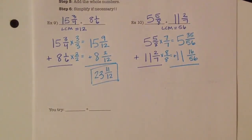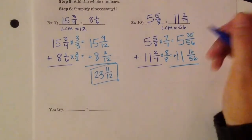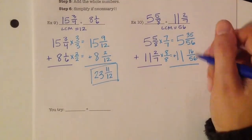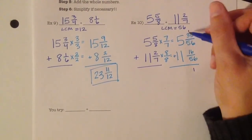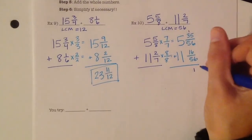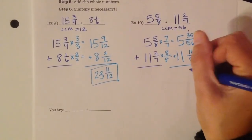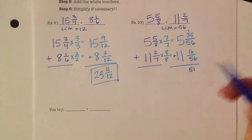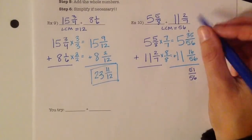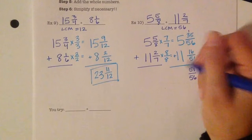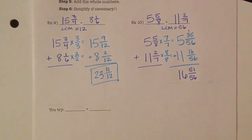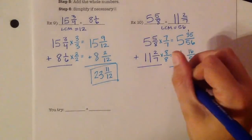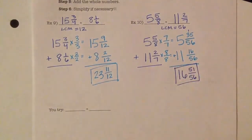Now I can go ahead and add. 35 plus 16. 5 plus 6 is 11. Carry the 1. 1 plus 3 plus 1 is 51 over 56. Then I add 5 plus 11, which is 16. I always should double check to make sure that I can simplify. I can't. So that's my final answer. Thank you so much for working through it.